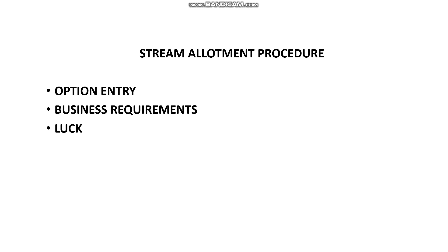When filling your stream preferences, you need to rank all available options. If you're from Bangalore you'll have more stream options; if you're from Mumbai or Delhi, you'll have fewer. For example, if given 10 options, rearrange all 10 according to your priority — you can't leave any blank. Focus on getting your top 4 correct, then fill in the remaining 6 in any order and submit.